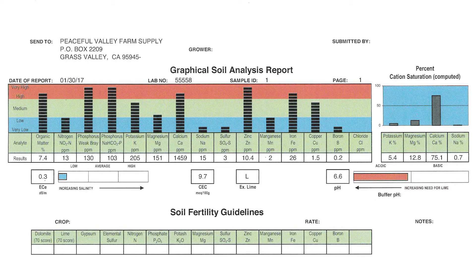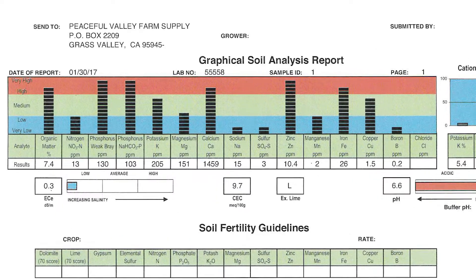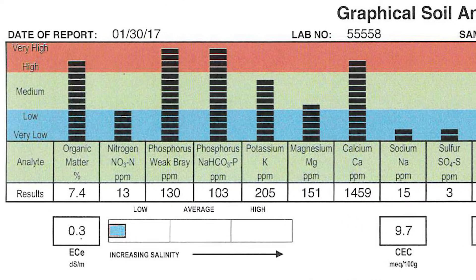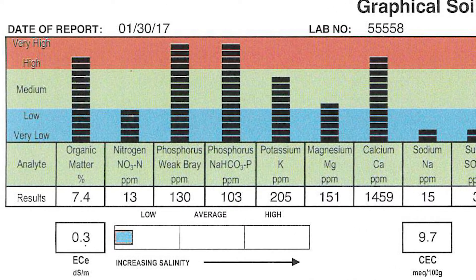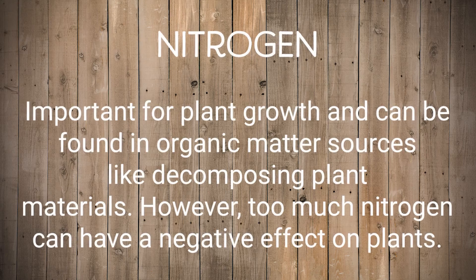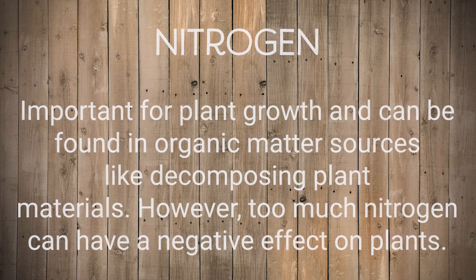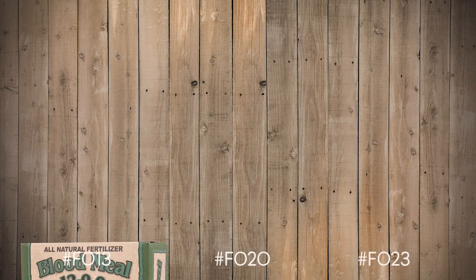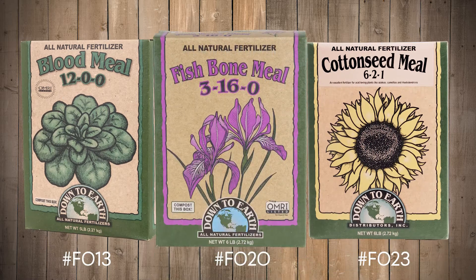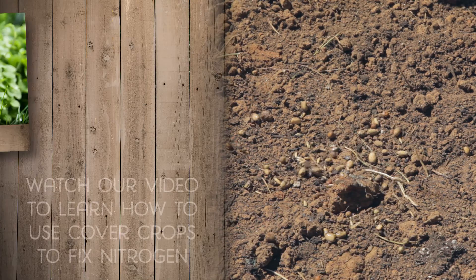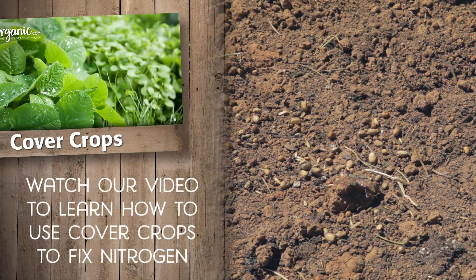Next to and related to organic matter is nitrogen. This is important for plant growth, but too much can also be harmful. If you have high organic matter, your soil will get some nitrogen from that as it breaks down. Good sources of nitrogen include blood meal, fish meal, and cottonseed meal, or planting a cover crop will fix nitrogen.